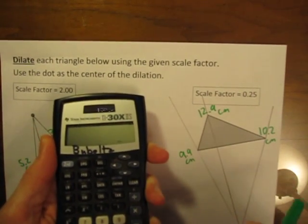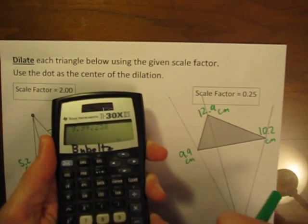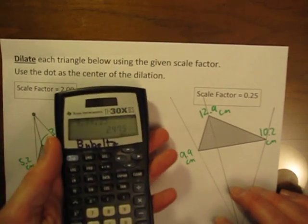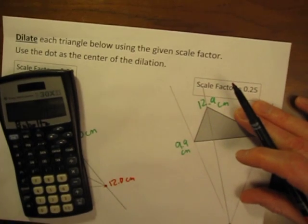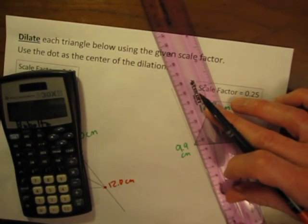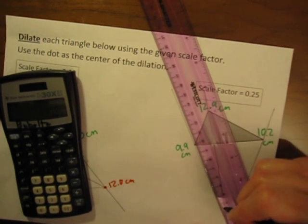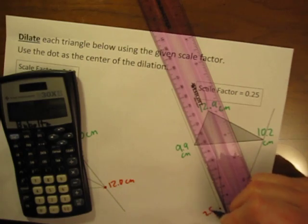So let's try this. Let's do 9.9 times the scale factor, 0.25, equals, basically to the nearest tenth, it's 2.5. So let's measure 2.5 cm up that line, and it's going to put me right there, is 2.5 cm.